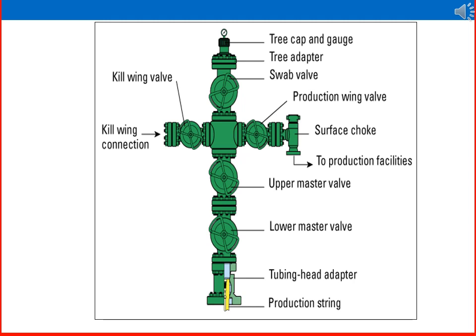Above the surface choke is the production wing valve, and on the other side is the kill wing valve. At the top of the Christmas tree is the swab valve, along with adapters, tree cap, and gauges. Each valve has its own function, which we are discussing in the coming slides. Let's closely watch and understand the various valves arranged in a Christmas tree.